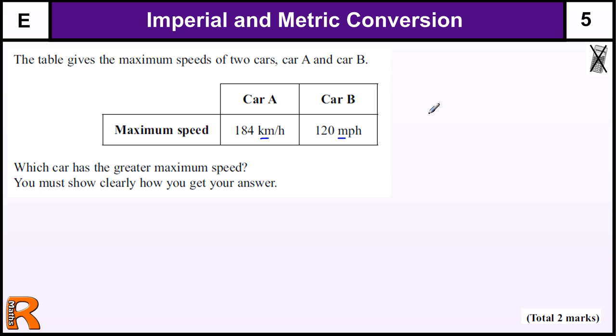This is the standard conversion that's used for converting kilometers and miles: 8 kilometers is approximately equal to 5 miles.